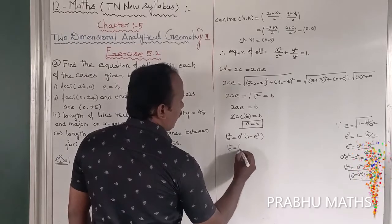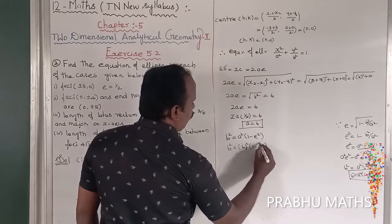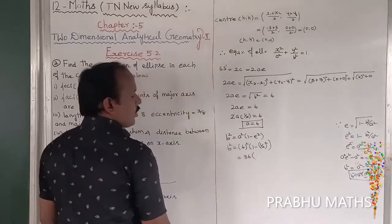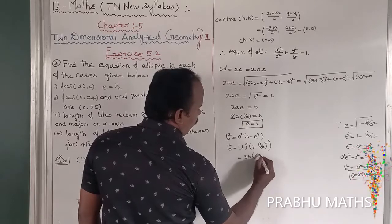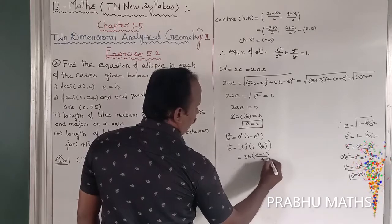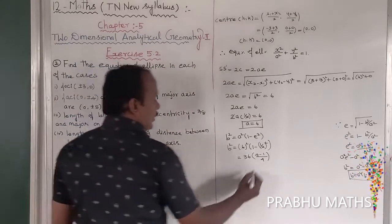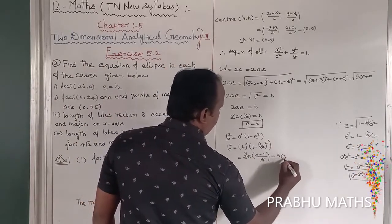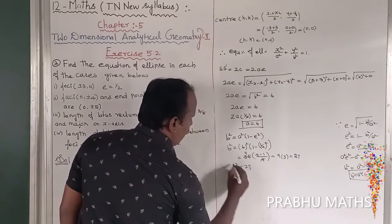So B squared is equal to A squared into 1 minus E squared. A is equal to 6, so: 6 whole squared into 1 minus (1 by 2) whole squared equals 36 into (1 minus 1 by 4). That is 36 into (4 minus 1) divided by 4, equals 36 into 3 by 4. So 9 into 3 equals 27. Therefore B squared is equal to 27.